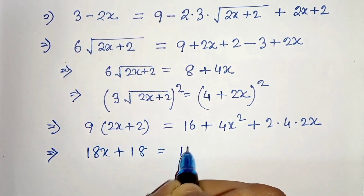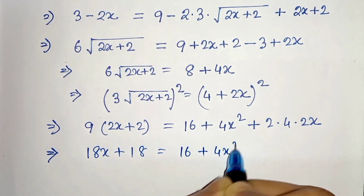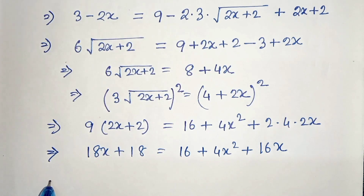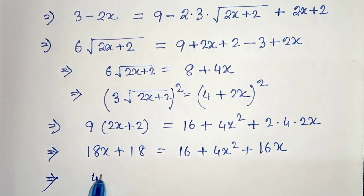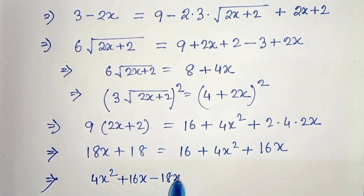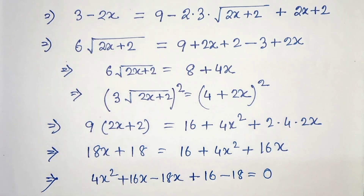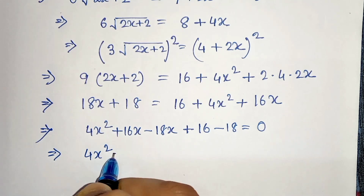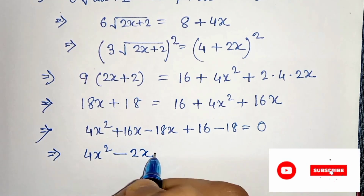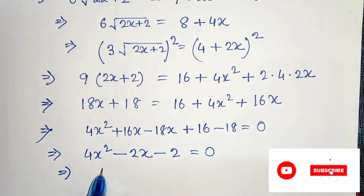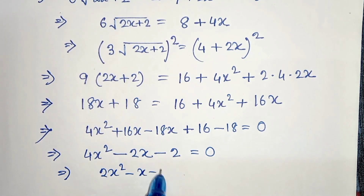So in the next step we write 9(2x) = 18x plus 18, equals 16 + 4x² + 16x. Now taking all terms to one side: 4x² + 16x - 18x + 16 - 18 = 0, which gives 4x² - 2x - 2 = 0. Dividing by 2: 2x² - x - 1 = 0.